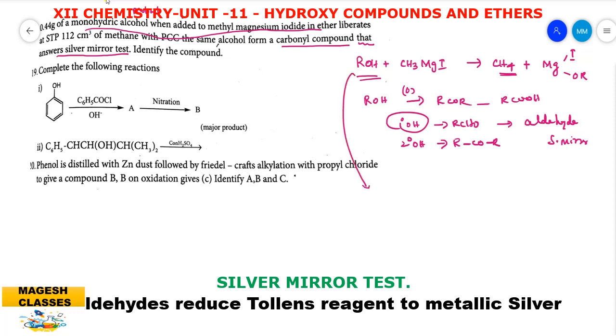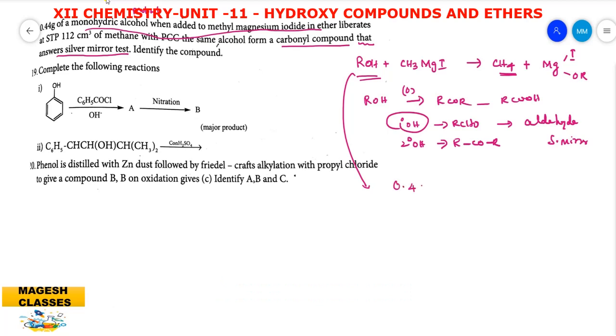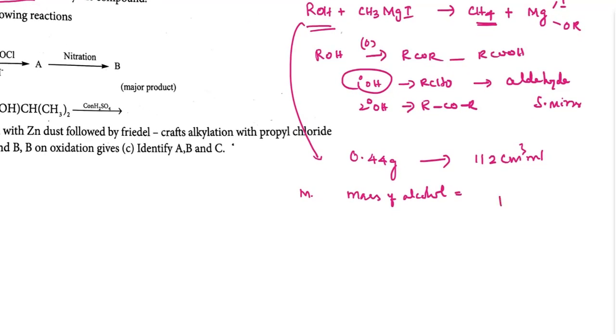So from the information, first you have to find out the molecular mass. That is 0.44 gram of the alcohol gives 112 centimeter cube, that is this much amount of methane. So what is the one mole of this alcohol? You can find out. The molecular mass of the alcohol is equal to 112 gram of methane is obtained from 0.44 gram. Therefore, one mole, that is 22,400 centimeter cube. By canceling, you get 200 into 0.44, that is 88 gram.